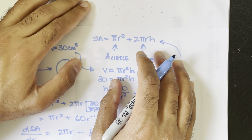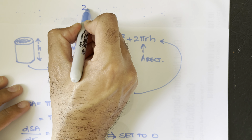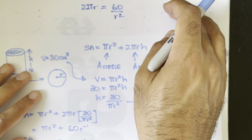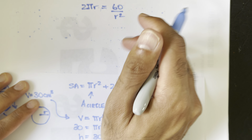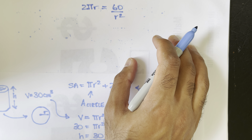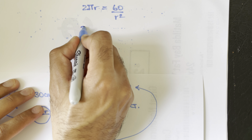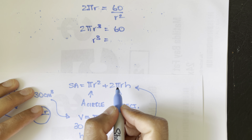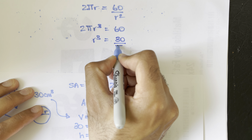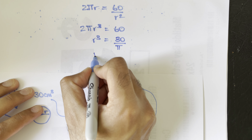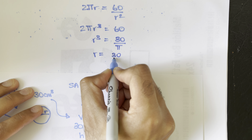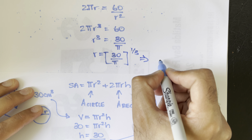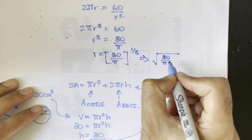Rearranging, we get 2πr = 60/r². Moving r² to the left side gives 2πr³ = 60, so r³ = 30/π, and therefore r = (30/π)^(1/3), which is the cube root of 30 over π.